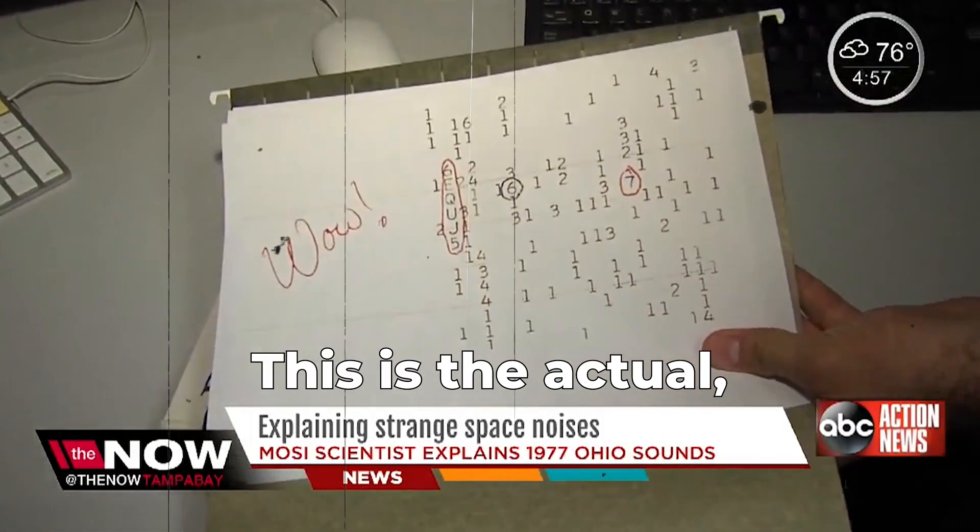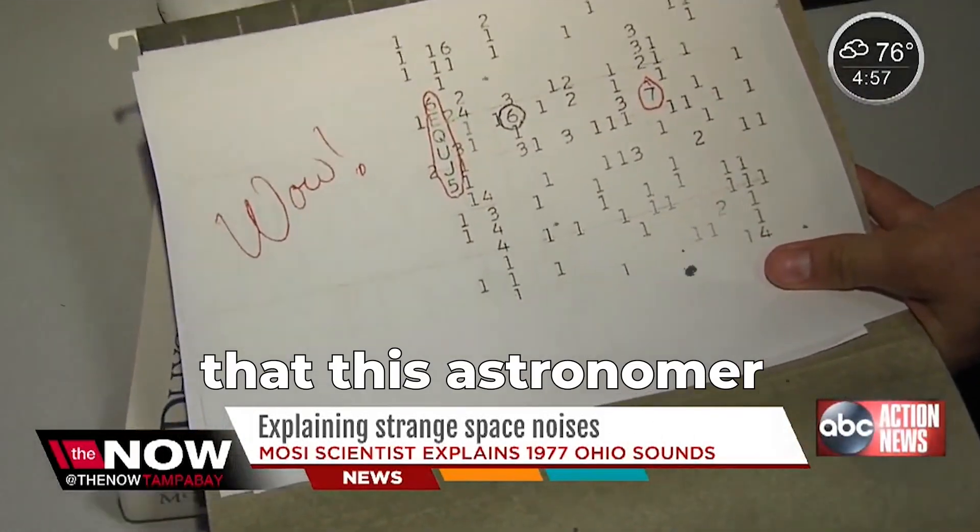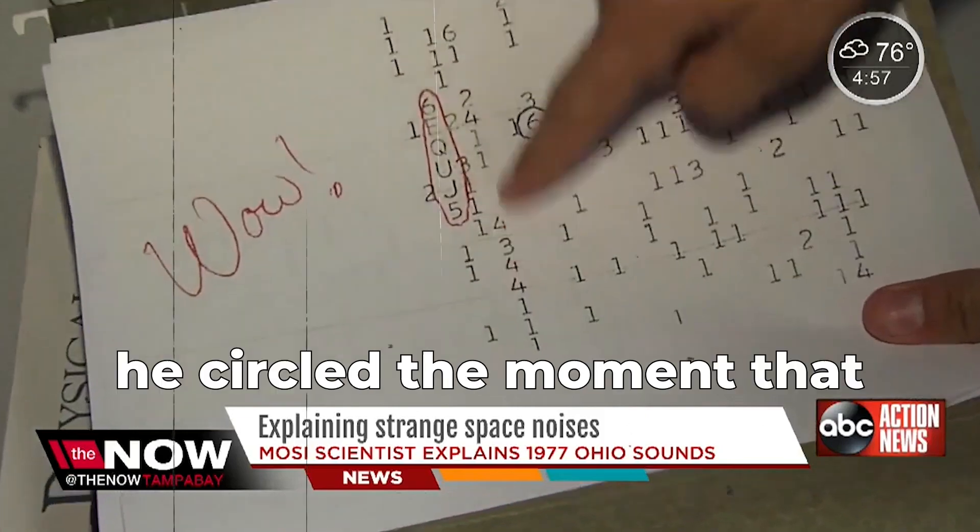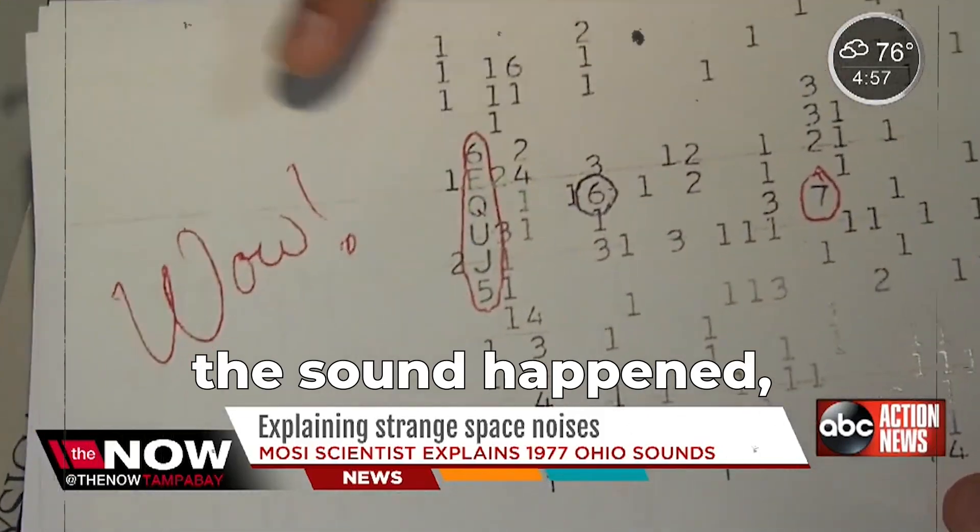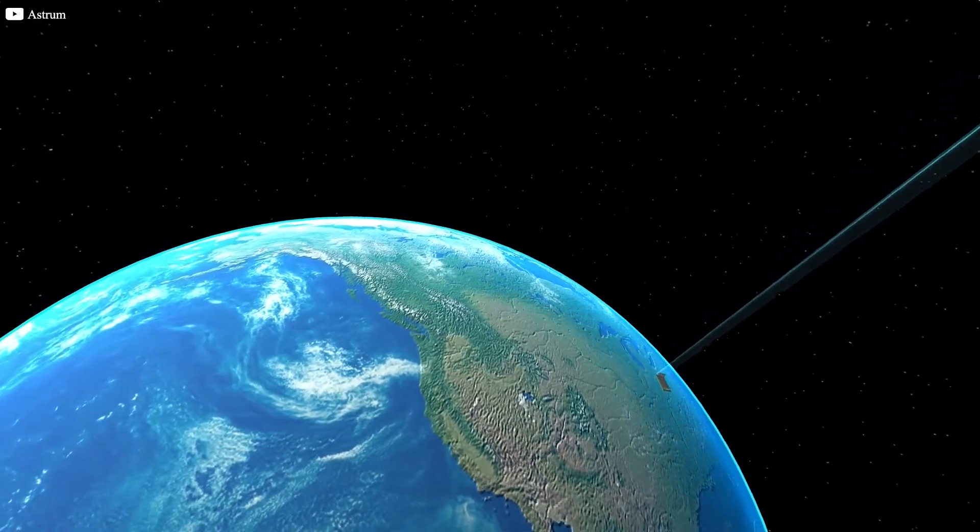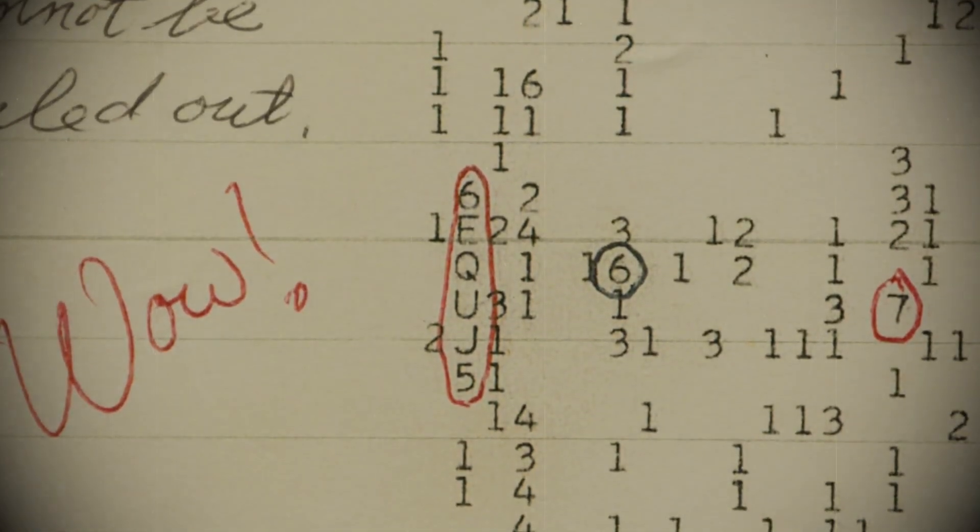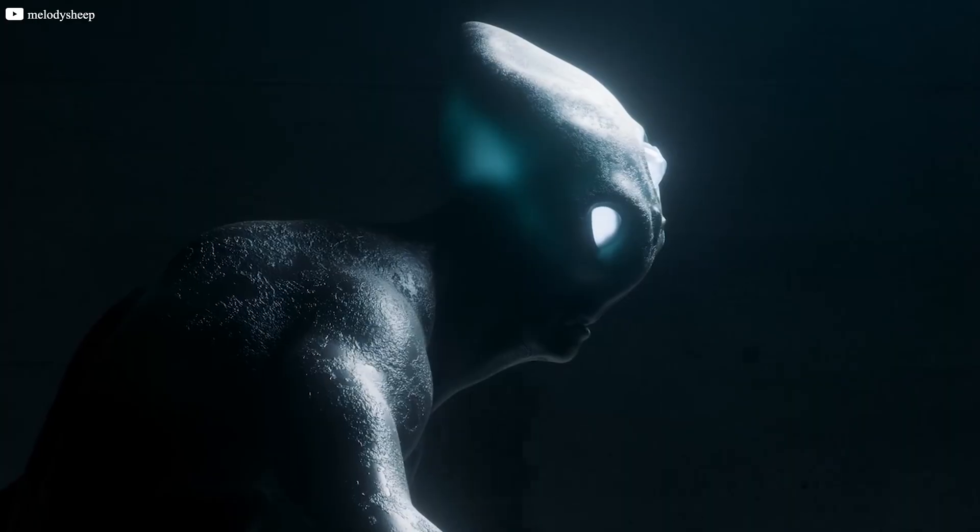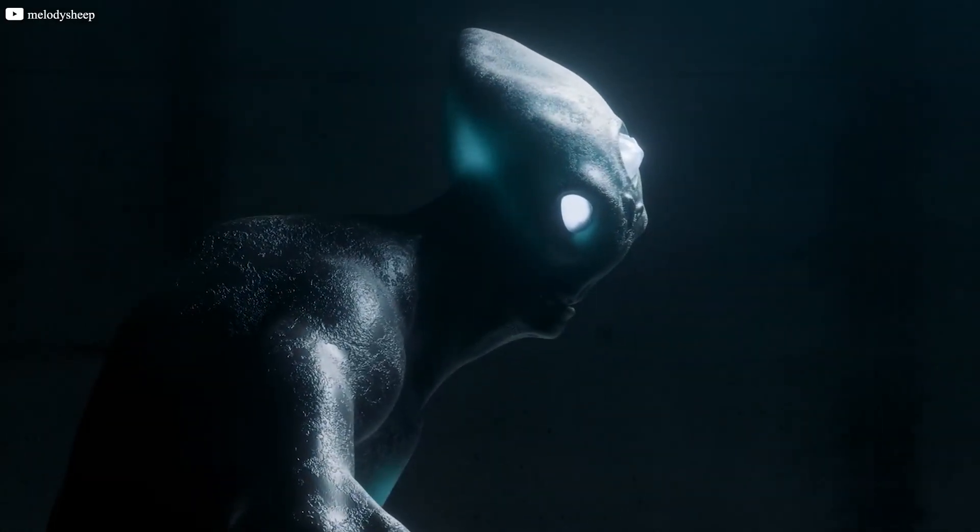Take a look at this. This is a copy of the actual notes that this astronomer made back then. You can see he circled the moment that the sound happened, even wrote the words 'wow.' This is the wow signal, a mysterious radio burst detected in 1977.